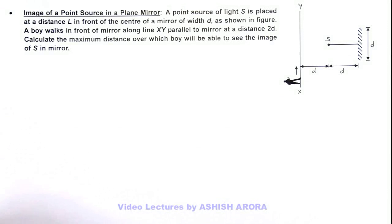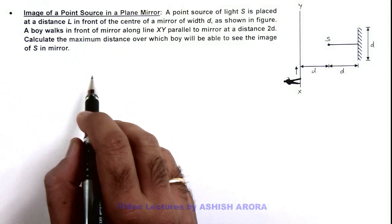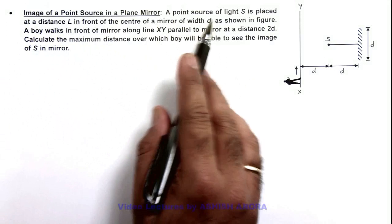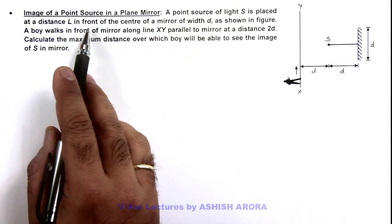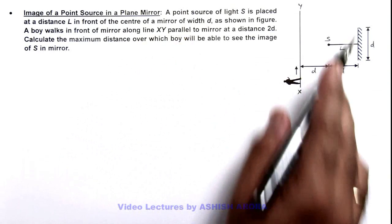In this illustration, we'll study the image of a point source in a plane mirror. Here the situation is given as: a point source of light S is placed at a distance L in front of this mirror of width d, as shown.